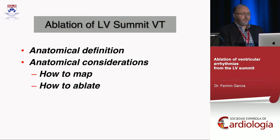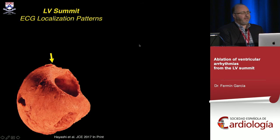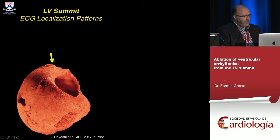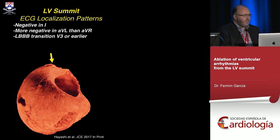So how do we approach this? The first step in every VT ablation is to understand the EKG. Arrhythmias from the LV summit are on the left side of the midline — they always have a bigger negative component in lead I, and they're always more negative in AVL than AVR. They're usually left bundle branch block with transition before or at V3.